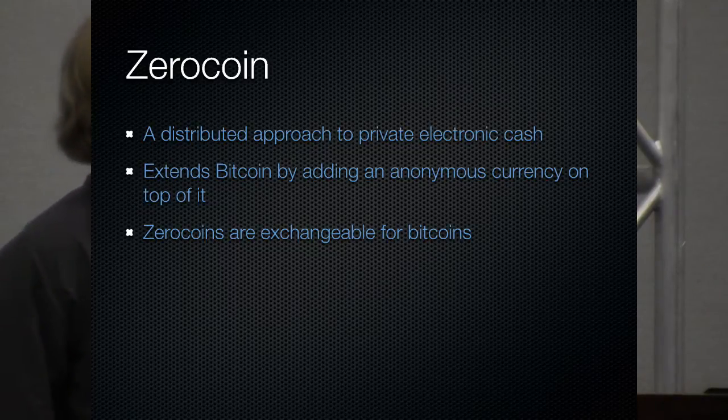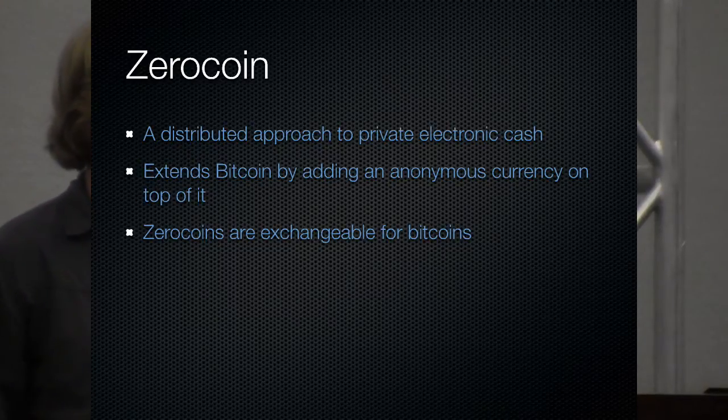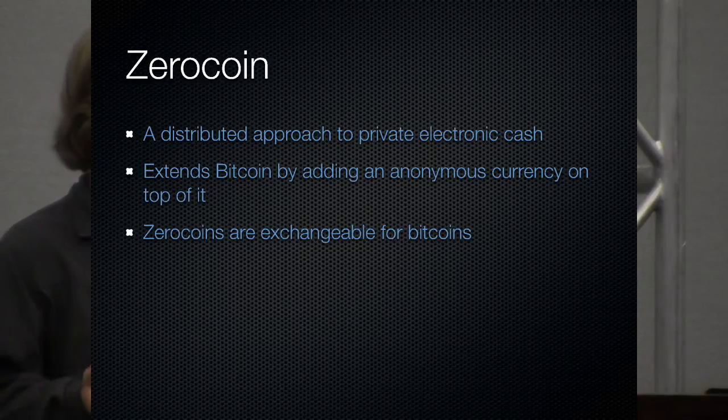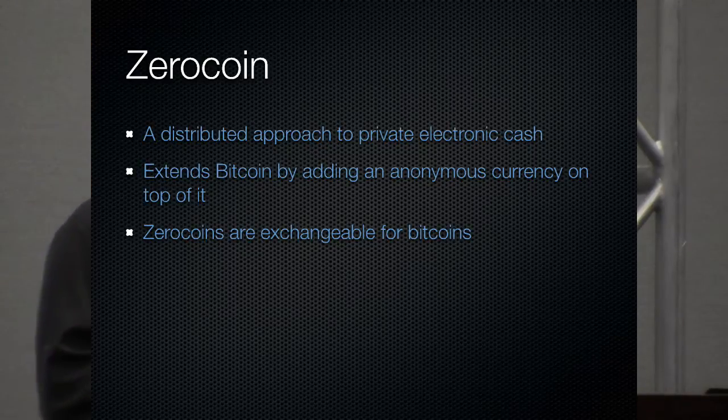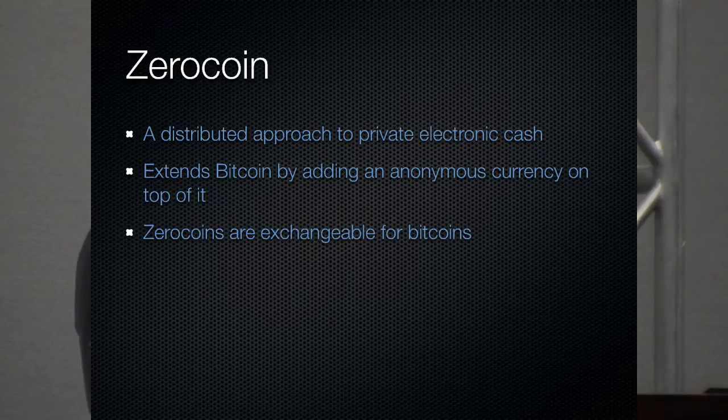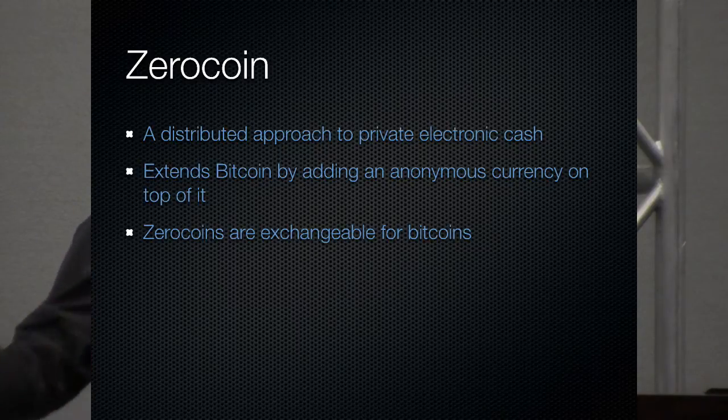So this is where ZeroCoin comes in. ZeroCoin is a distributed approach to building electronic e-cash on top of Bitcoin. It extends Bitcoin by adding an anonymous currency on top of it, which is called ZeroCoin, somewhat uncreatively. And ZeroCoins are exchangeable for Bitcoins. Just as the U.S. dollar used to be backed by gold and you could exchange a dollar bill for one dollar's worth of gold, you can exchange whatever the denomination of ZeroCoin is for the equivalent value of Bitcoins. And that's sort of the entire way we get value from this. We don't have to invent our own currency and convince people to use it.